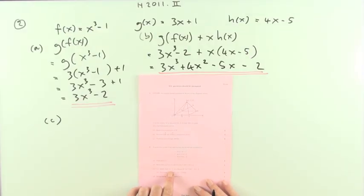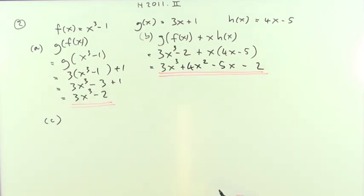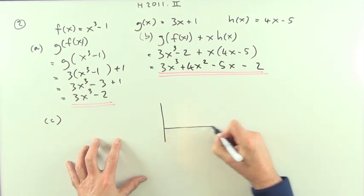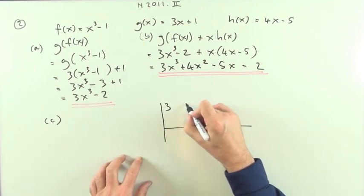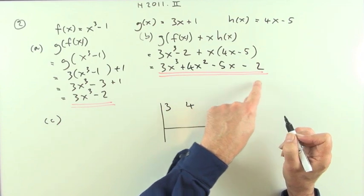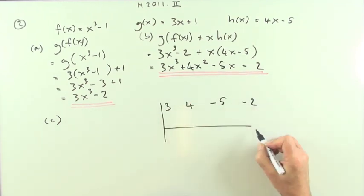Part c, show that x minus 1 is a factor of this expression. x minus 1, well if it's a factor it would divide in with no remainder, so I'll do a division. But I'll do a synthetic division, so pop down the coefficients, make sure there's no missing ones: 3, 4, negative 5, negative 2. And if x minus 1 is meant to be a factor, then 1 would be the root. Now let's pop that through.